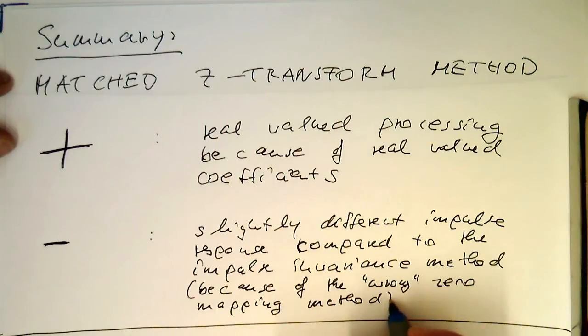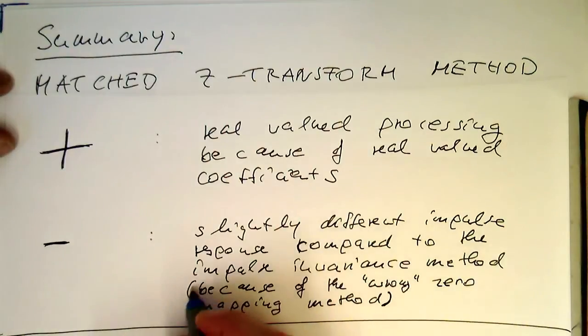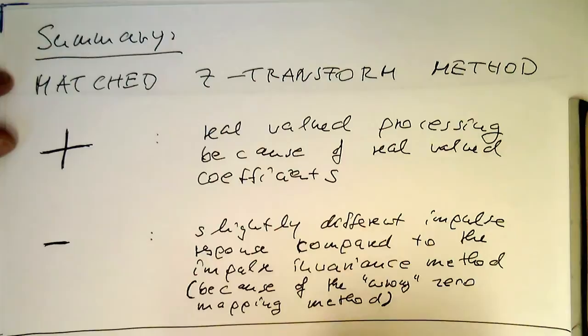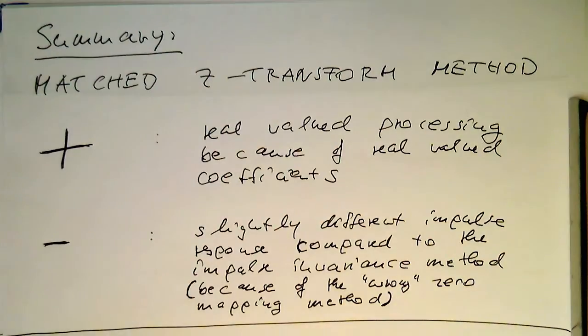But on the other hand, it's convenient and it gives us definitely complex conjugate zeros and poles. Therefore, that's not so dramatic.